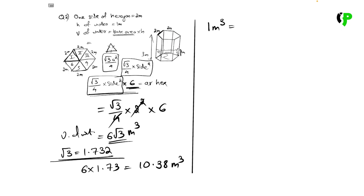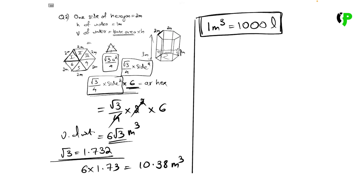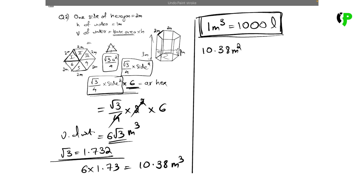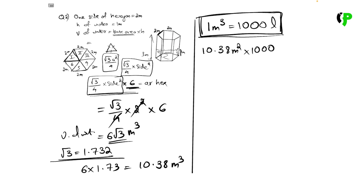Since 1 m³ equals 1000 liters, we multiply 10.38 m³ by 1000 to convert to liters, giving us 10,380 liters of rainwater collected.